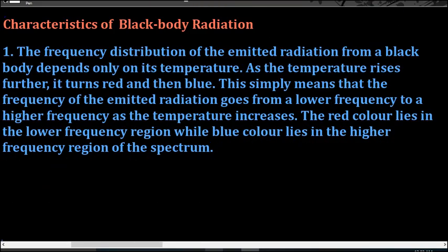The first characteristic of black body radiation is that the frequency distribution of the emitted radiations from a black body depends only on its temperature. When we increase the temperature, the black body will first turn red and then blue. This means that the frequency of the emitted radiation goes from a lower frequency to a higher frequency as the temperature is increased. The red color lies in the lower frequency region.